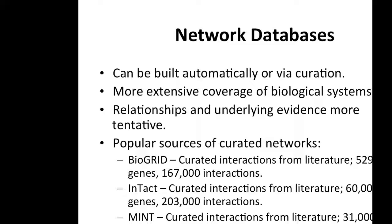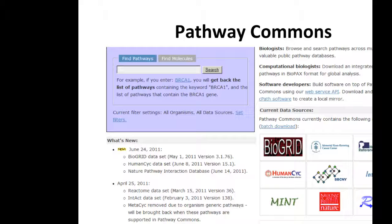In addition to those three larger databases, there are about 180 other network databases. Many of them have been collected together in a resource called Pathway Commons — www.pathwaycommons.org — which is a definitive collection of many different network and pathway databases.